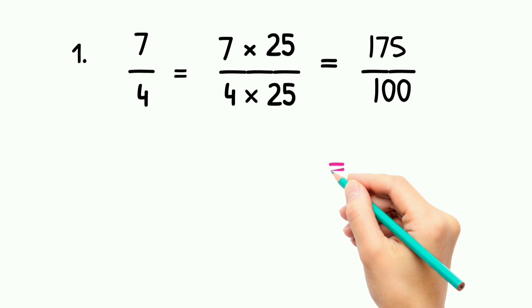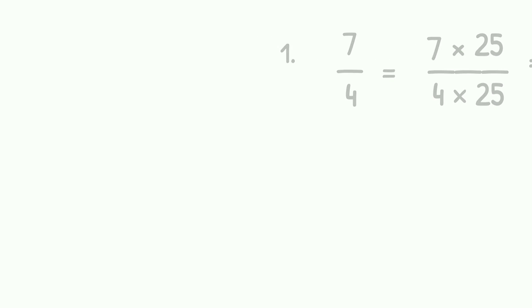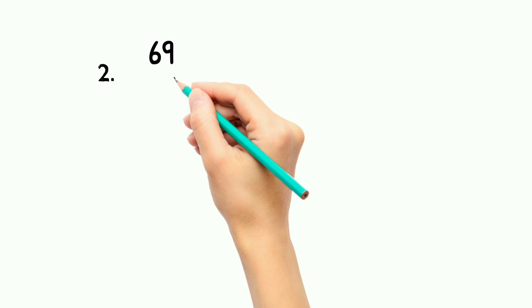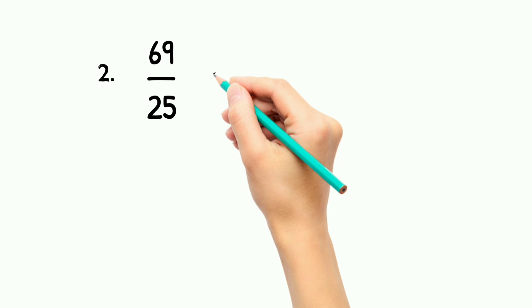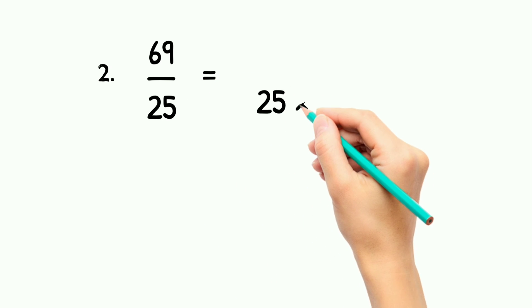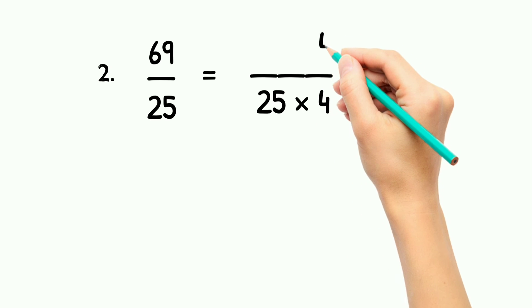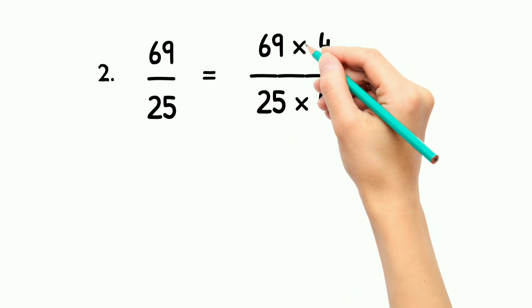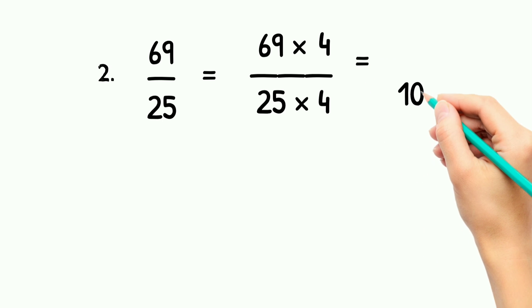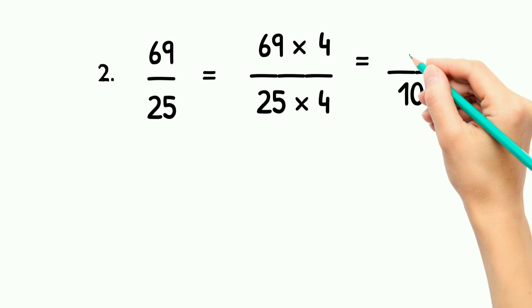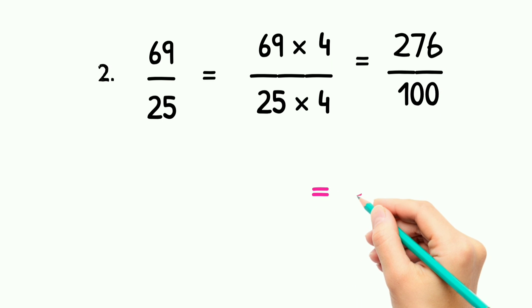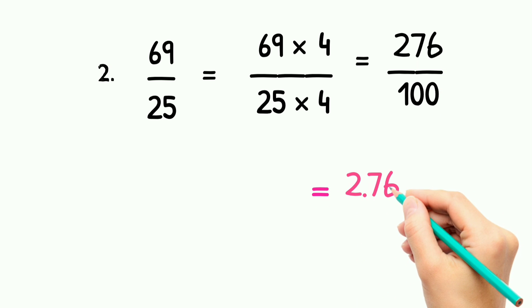Then its decimal form is 1.75. Whenever we divide any number with 100, the decimal point gets after the two digits from the right side. Let's see the second example. In this, the denominator is 25. And we know that 25 multiplied with 4 gets 100. We have to see the least possible power of 10. That is 100. We also get 1000, but we have to get the least possible power of 10. And in this, we get 100. And we get the decimal form of that fraction. That is 2.76.